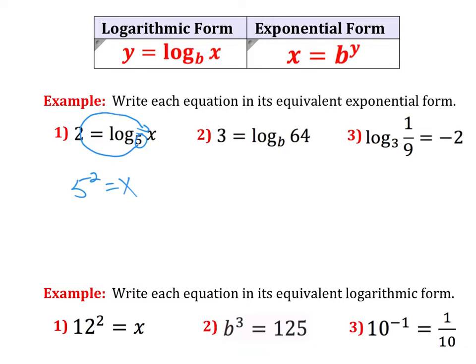For number 2, my base is b. I have 3 equals log base b of 64. So my base is b. Go around the equal sign. So b, then 3, then 64. b to the third equals 64. We could solve that too. What number to the third power is 64? That's 4.